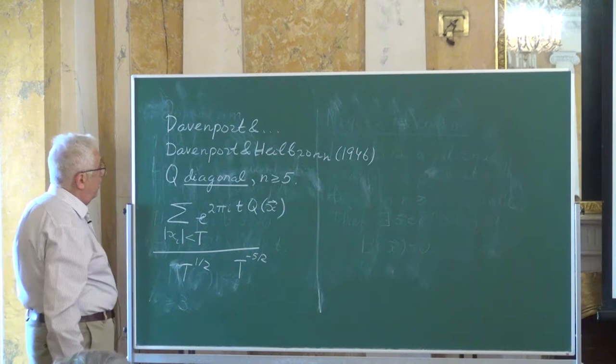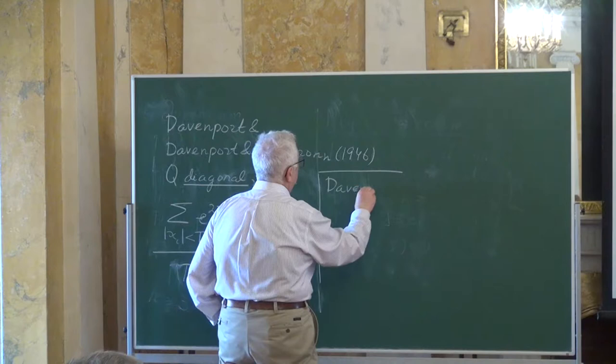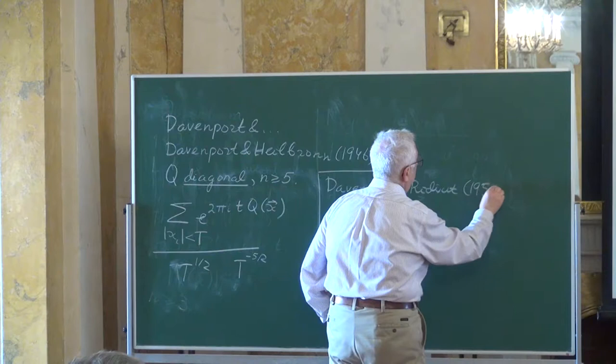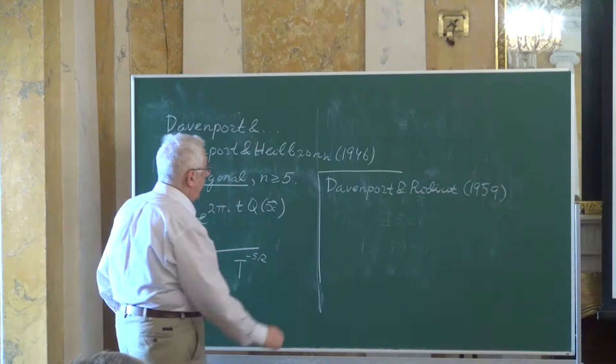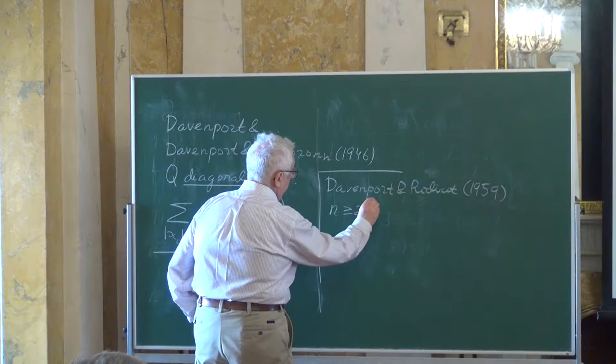After that, Davenport worked with different co-authors in a series of papers, culminating in the paper of Davenport and Roth from 1959, which handled n ≥ 21. The argument used by Davenport and his co-authors was essentially some kind of reduction to the diagonal case.